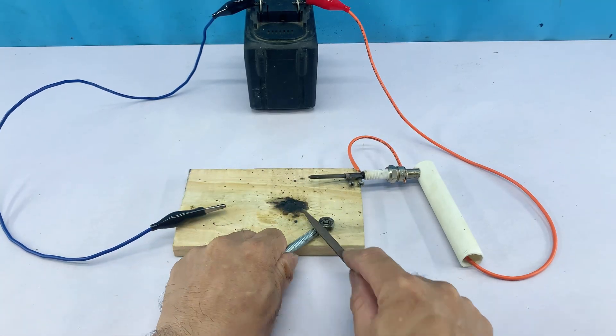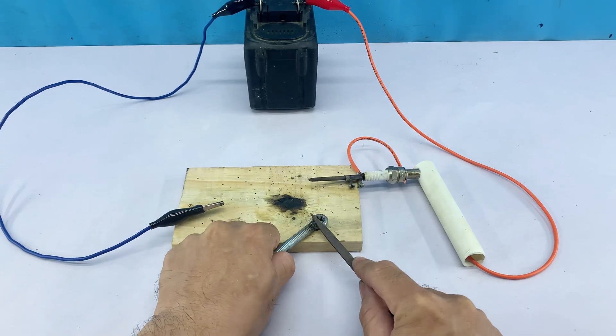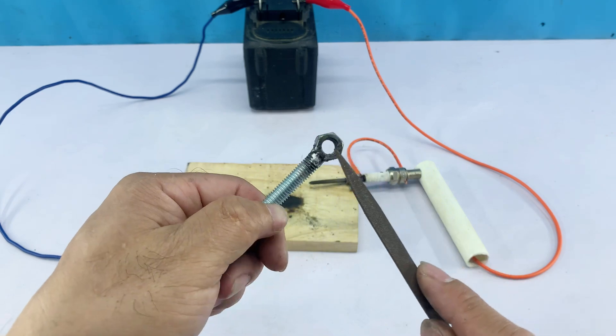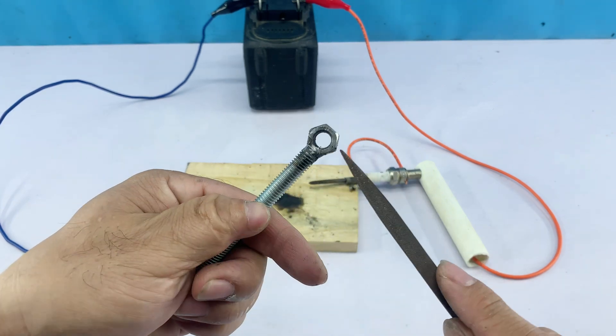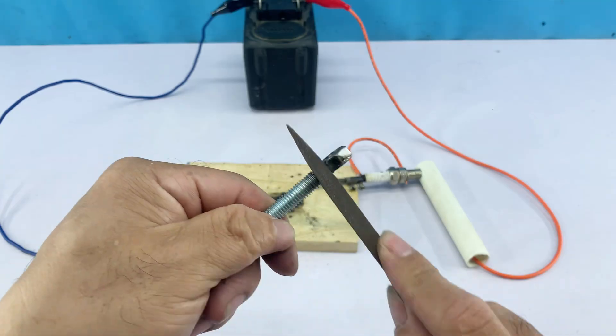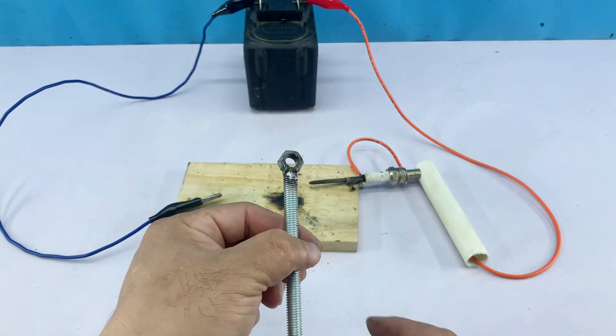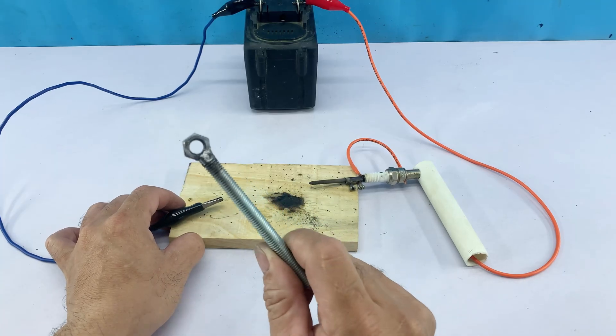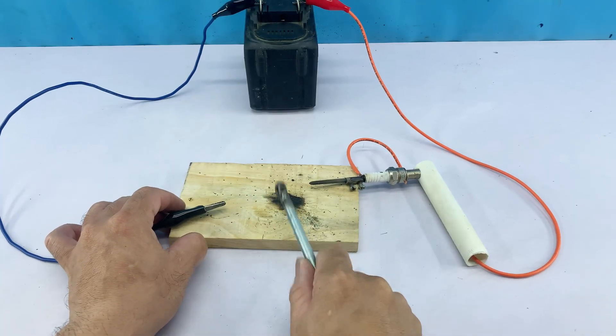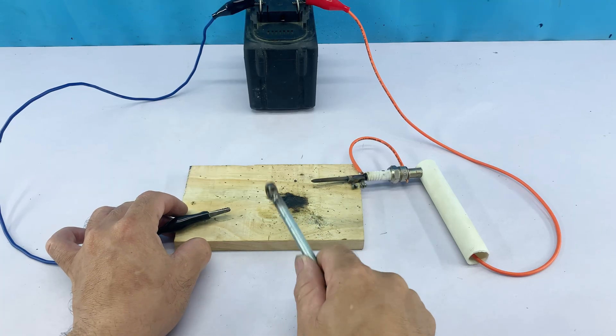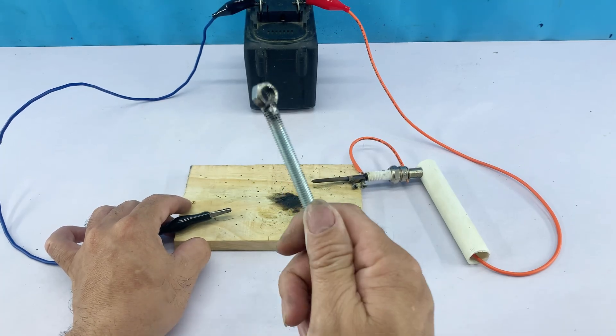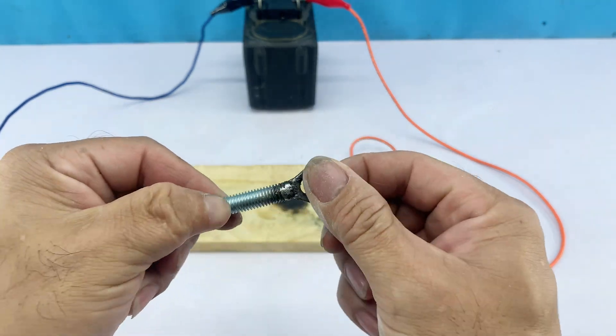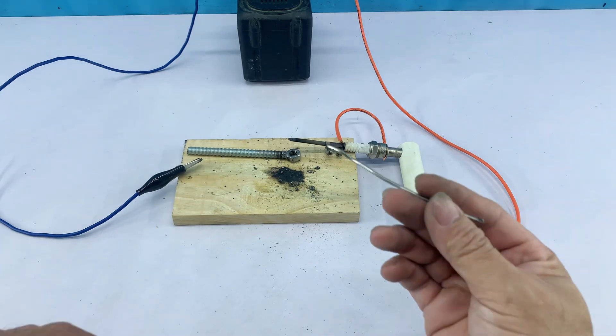After the nut was welded to the threaded bolt, I used a file to clean it up. It's truly amazing what you can create with a few simple items and a bit of ingenuity. Look at that strong, clean joint. This little tool is a game changer for quick fixes.